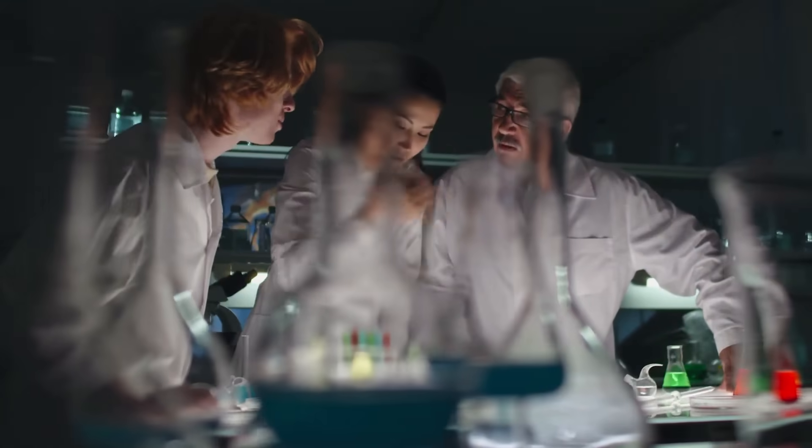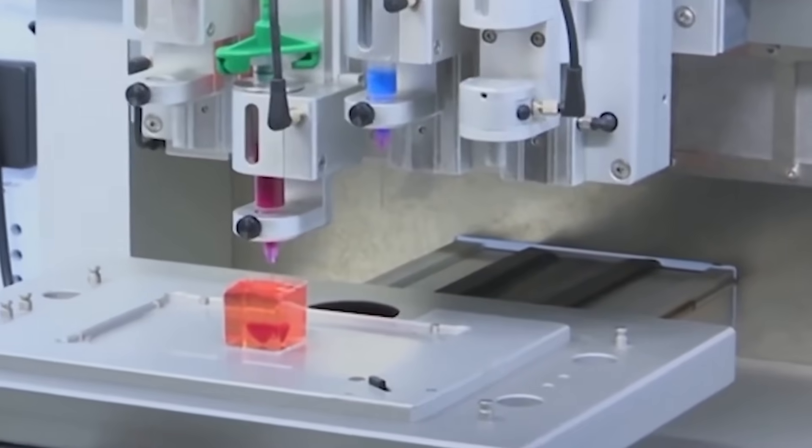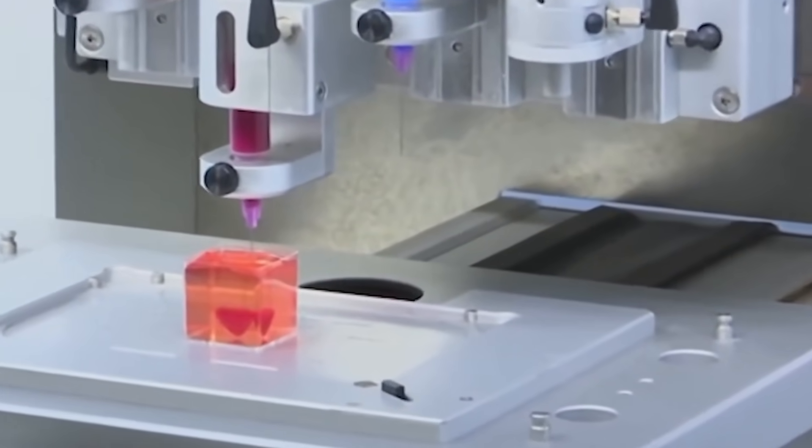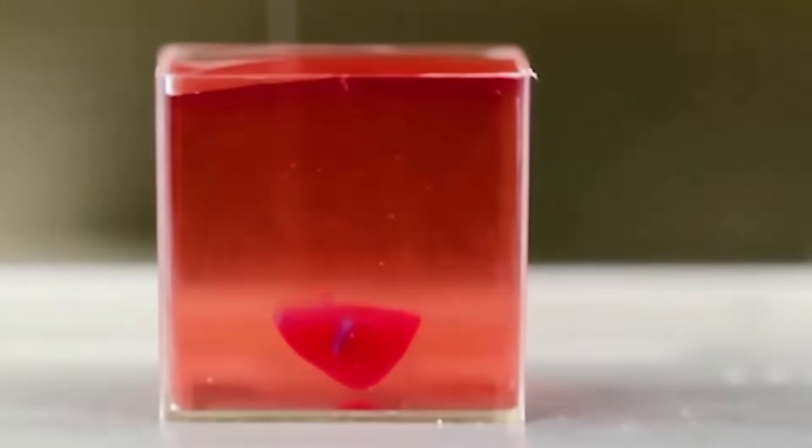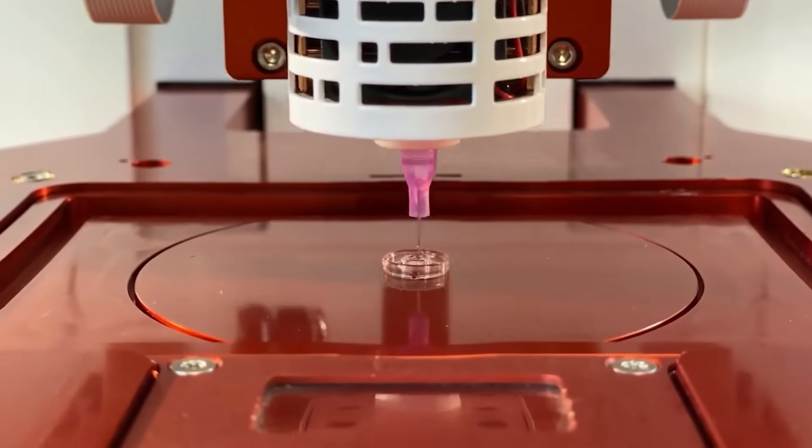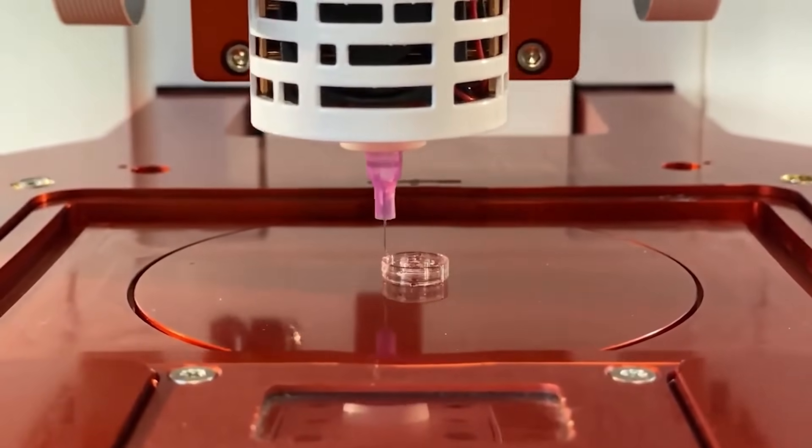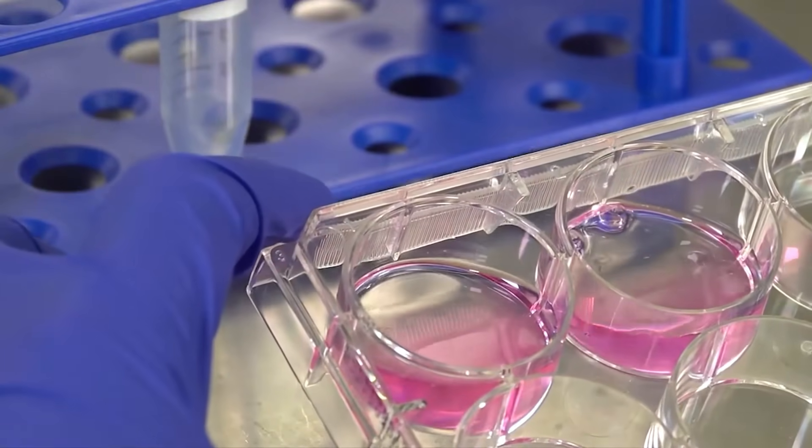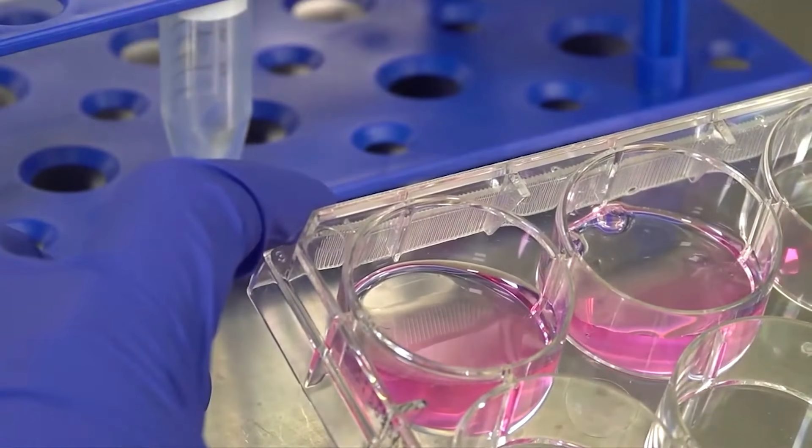Once the model is ready, the bioprinter carefully deposits cells layer by layer, often combined with a biocompatible scaffold that supports the growth and development of the tissue. The bioinks may include stem cells, growth factors, and extracellular matrix components that help the cells survive, differentiate, and form functional structures.